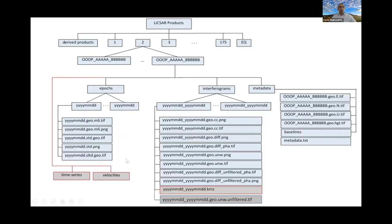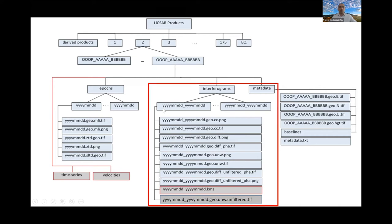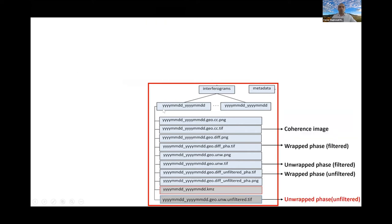Here you can see the LICSAR system file structure, which shows all the products we are generating in LICSAR, starting from the top level. The LICSAR products are categorized into 175 folders, which correspond to Sentinel-1's 175 orbits. In the next level, we have the frames definition, and for each frame, the main LICSAR products are stored in the interferograms folder. We are generating the coherence image, the filtered wrapped and unwrapped phases, as well as the unfiltered phase.